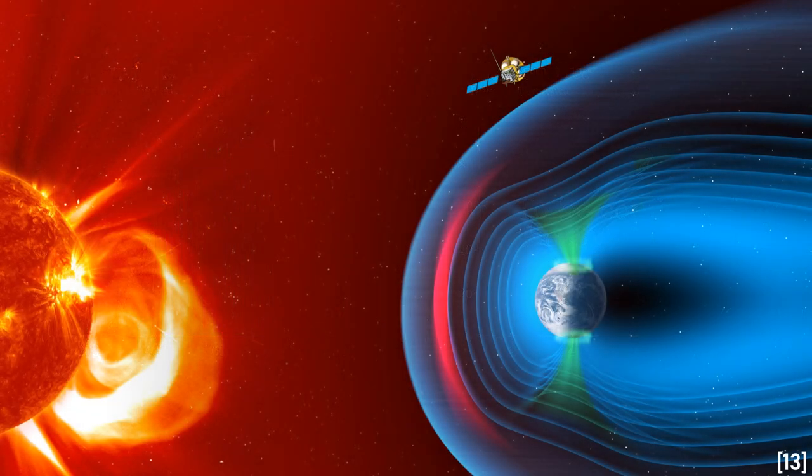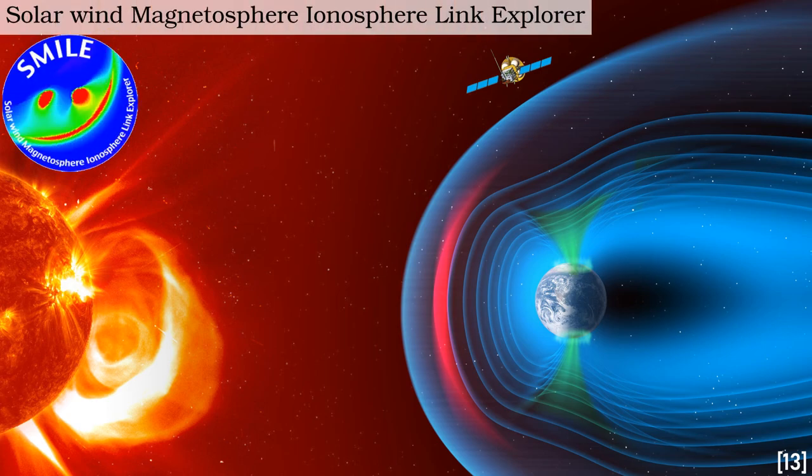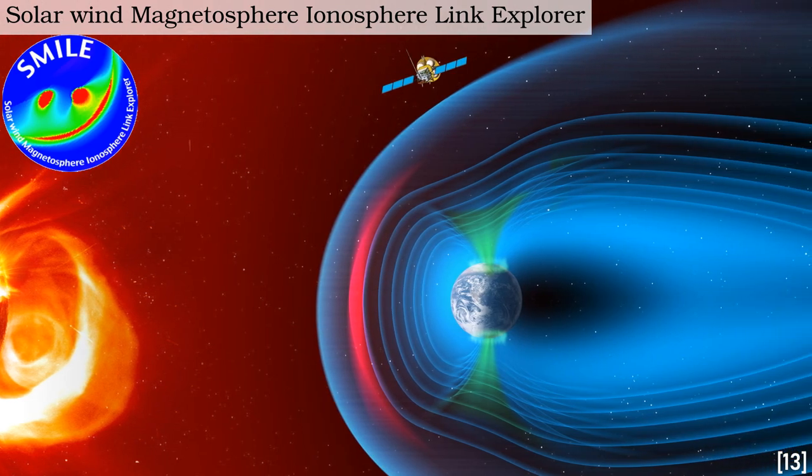Another mission which will use a lobster-eye telescope in a very different way is SMILE, the Solar Wind Magnetosphere-Ionosphere Link Explorer. This is a joint mission between the European Space Agency and the Chinese Academy of Sciences, though again, its lobster-eye telescope will be assembled at the University of Leicester, England.